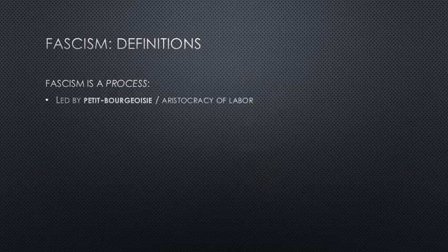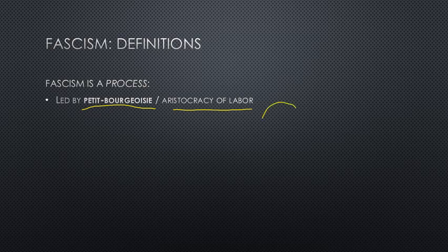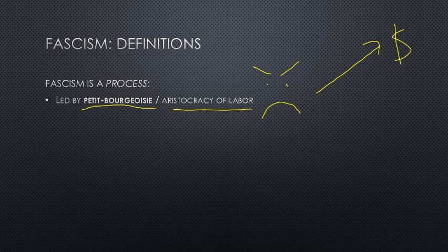Fascism as a movement tends to be led by sectors of the petty bourgeoisie and, to some extent, the aristocracy of labor. These might be people who own their own business, people in a managerial position who direct others' labor power, or really skilled workers who are on the edge of being able to launch their own thing — people who could become independent contractors. It tends to develop in times of economic or political crisis when these layers, whose class position starts to get unstable and threatened, develop a kind of anger and resentment. They place blame in many directions at once, both on the capitalist class and other layers of the working class that they resent.